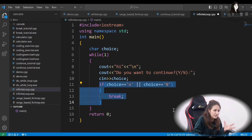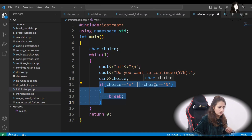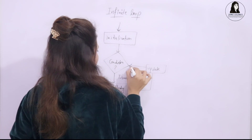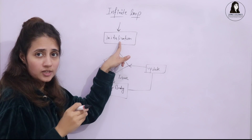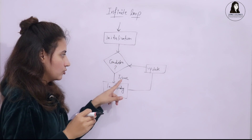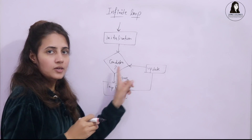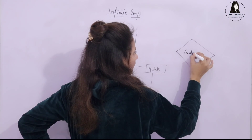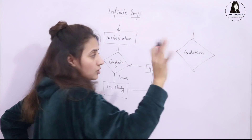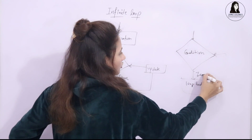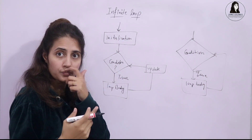Otherwise, in simple programs if there is an infinite loop we see it as an error, a bug, and we correct it. For the flowchart of an infinite for loop: initialization first, then condition is checked and it is always true, then loop body, then update, then condition again — always true — and so on. For an infinite while loop: there is a condition, we enter the loop body, then condition again — always true — and it repeats endlessly.